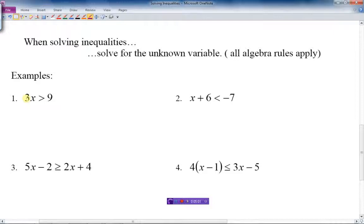3x is greater than 9. I want to get x all by itself. How do I do that? I have to get rid of the 3. What's the 3 doing to the x? It's multiplying the x. What is the opposite of multiplying by 3? The opposite is dividing by 3. So that's what I do. I do the opposite to get rid of that 3. The 3's cancel out, which leaves me with just x, which is what I want, and 9 divided by 3 is 3. And there's my answer: x is bigger than 3. That's the solution algebraically.